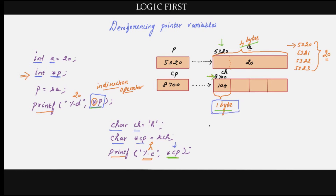Using the indirection operator star to fetch the value from memory is known as dereferencing pointer variables. That is, when you mention star p, you are going to the address and fetching the value — that is known as dereferencing pointer variables.